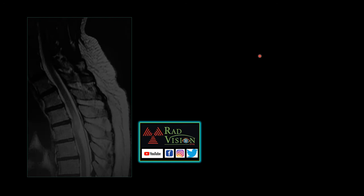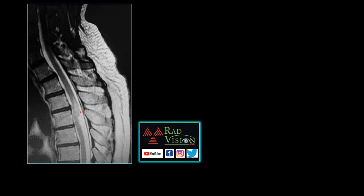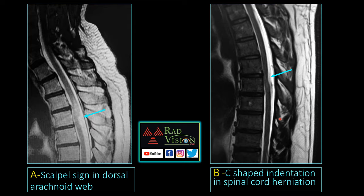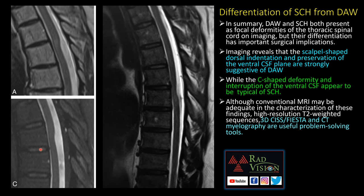Next case shows prominent dilatation of the posterior CSF space impinging on the spinal cord with cord edema, mimicking the scalpel sign, while the ventral CSF space is maintained — this is the scalpel sign in dorsal arachnoid web. The companion case shows a C-shaped indentation over the posterior thecal sac causing cord compression with minimal cord edema, but with effacement of the ventral CSF space — this is spinal cord herniation. CT myelography, 3D CISS, and FIESTA sequences help differentiate these from conventional sequences.